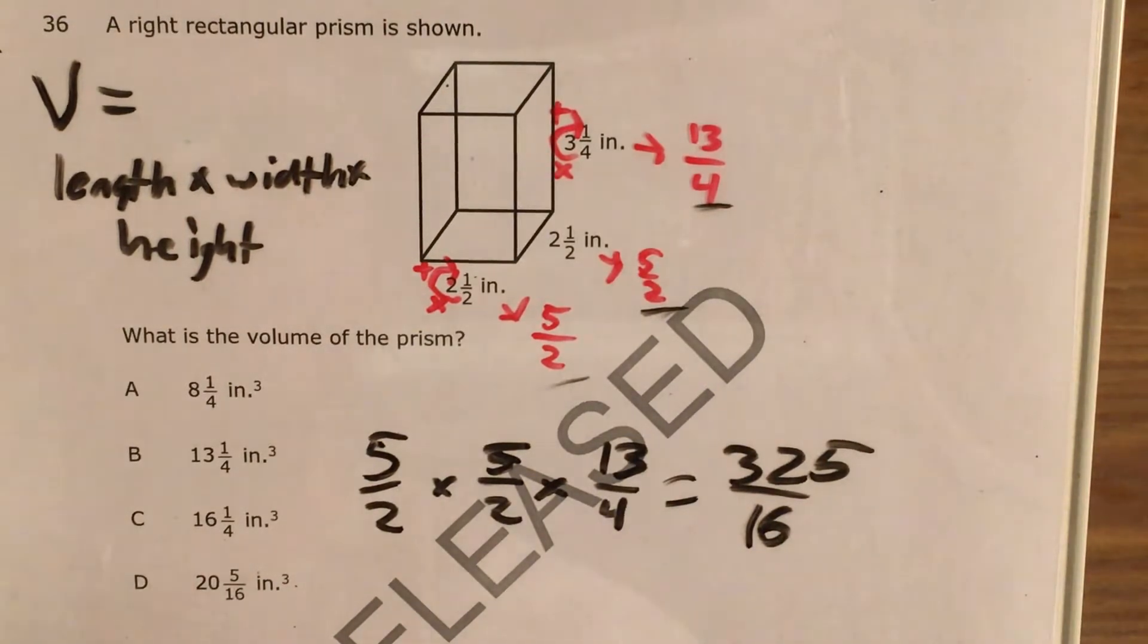So this is 325 sixteenths. Now I don't know if I can simplify this yet, but I do want to go back from an improper fraction to a mixed number before I can confirm which of my answers it's going to correspond with.